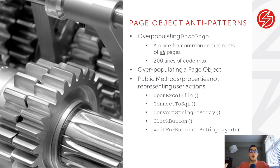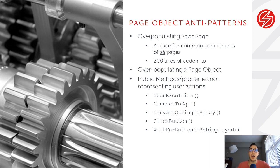You can also overpopulate the page object itself — this basically talks about premature automation. A lot of us will start our automation and realize we have a login page, so we capture all the properties and all the methods of that login page before we've even written a test. What that ultimately does is waste a lot of time and effort writing page objects that you may never fully use. There are a lot of unused methods and properties sitting in your class — it's just a wasted effort, premature automation.